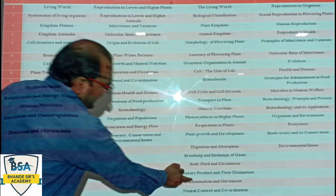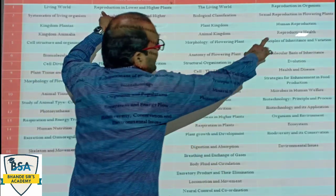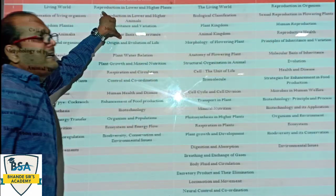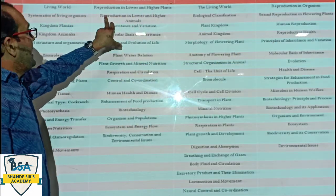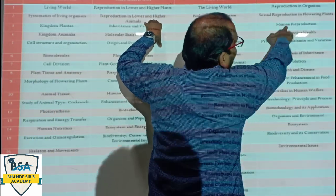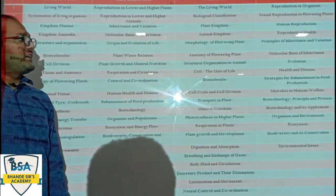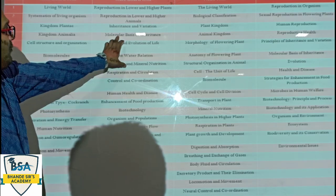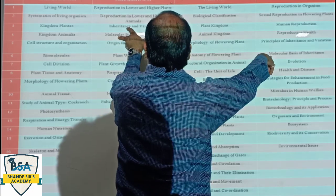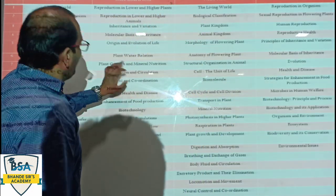Locomotion and Movement, Skeleton and Movement — here is Reproduction in Lower and Higher Plants, so here is Sexual Reproduction in Flowering Plants. Reproduction in Organisms means lower organisms. Reproduction in Lower and Higher Animals — so here is Human Reproduction, and some lower animals reproduction topics. Then we will find the Molecular Basis of Inheritance — here is Molecular Basis of Inheritance, and on top of that, Principles of Inheritance and Variation.